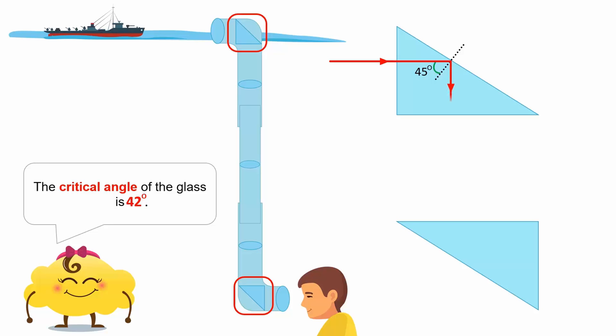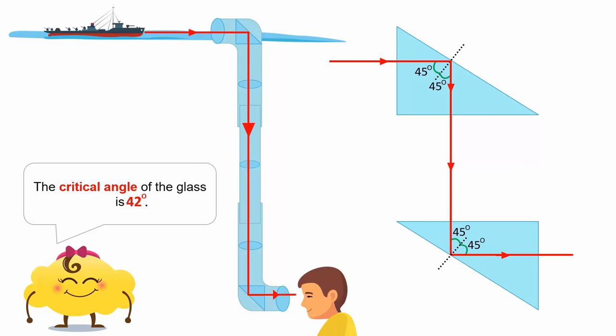This reflected ray leaves the top prism at the same angle. It then strikes the bottom prism at an angle of 45 degrees and is reflected into the viewer's eyes. Hence, the periscope directs the light from the object to the observer.